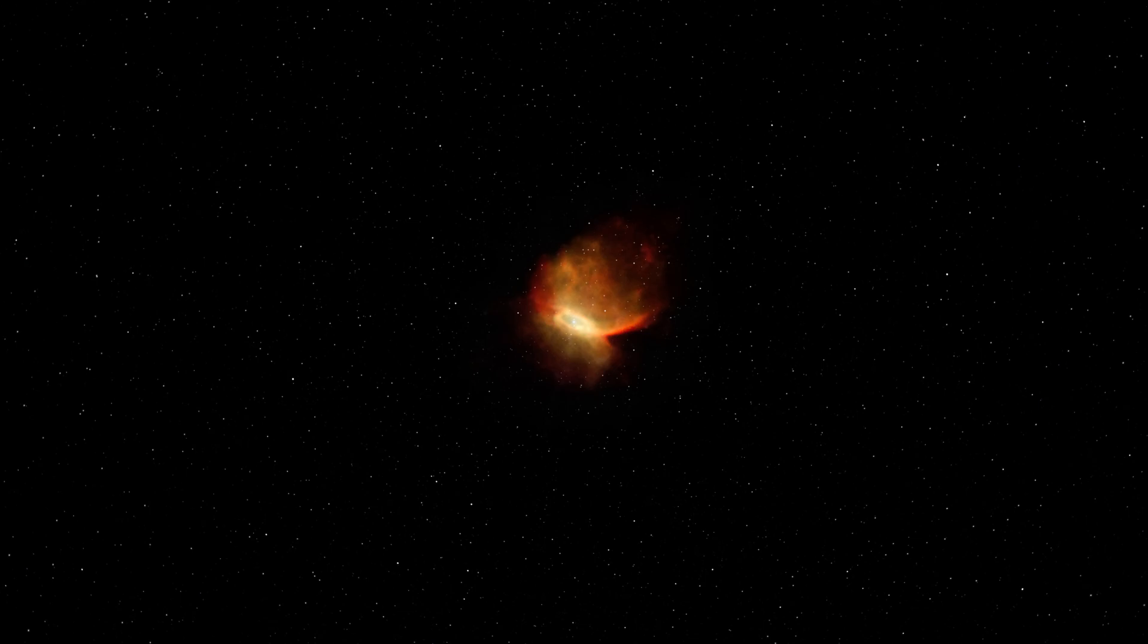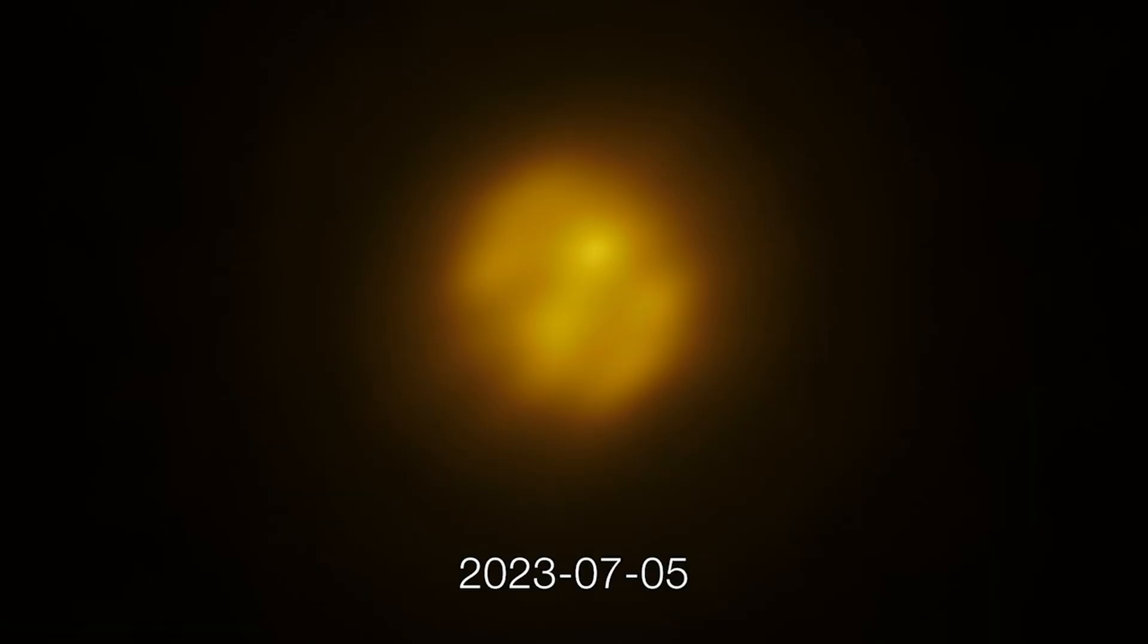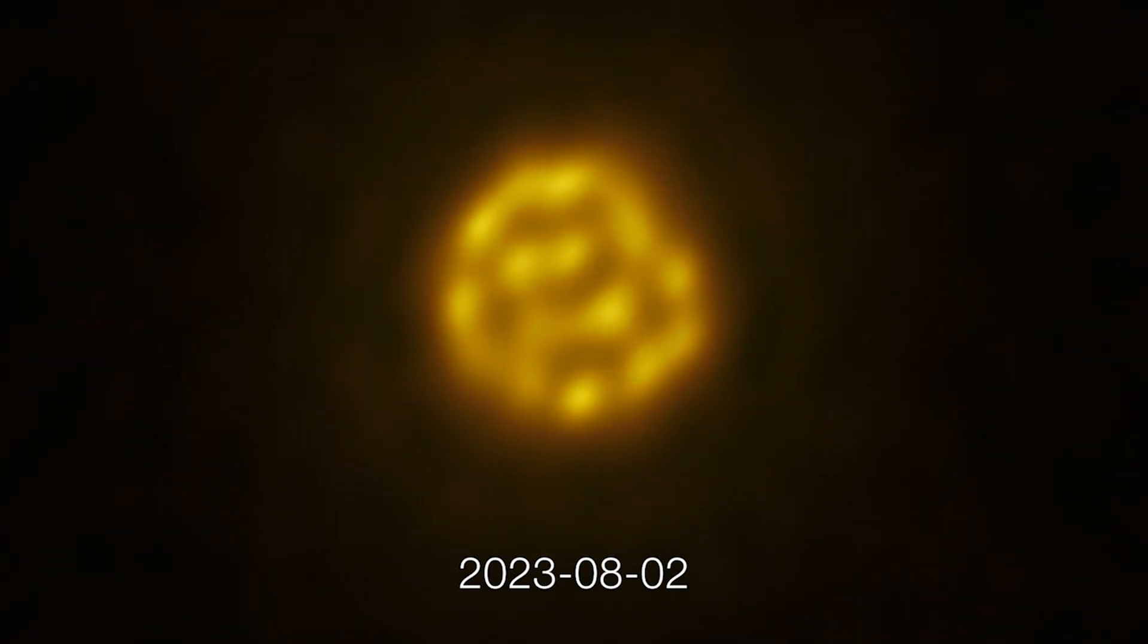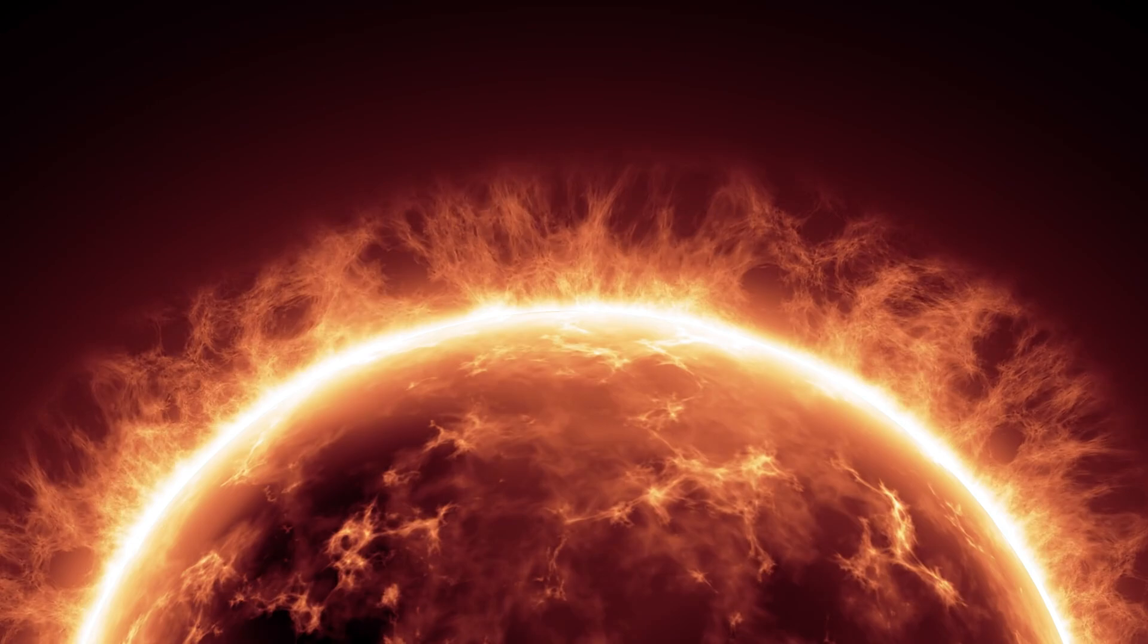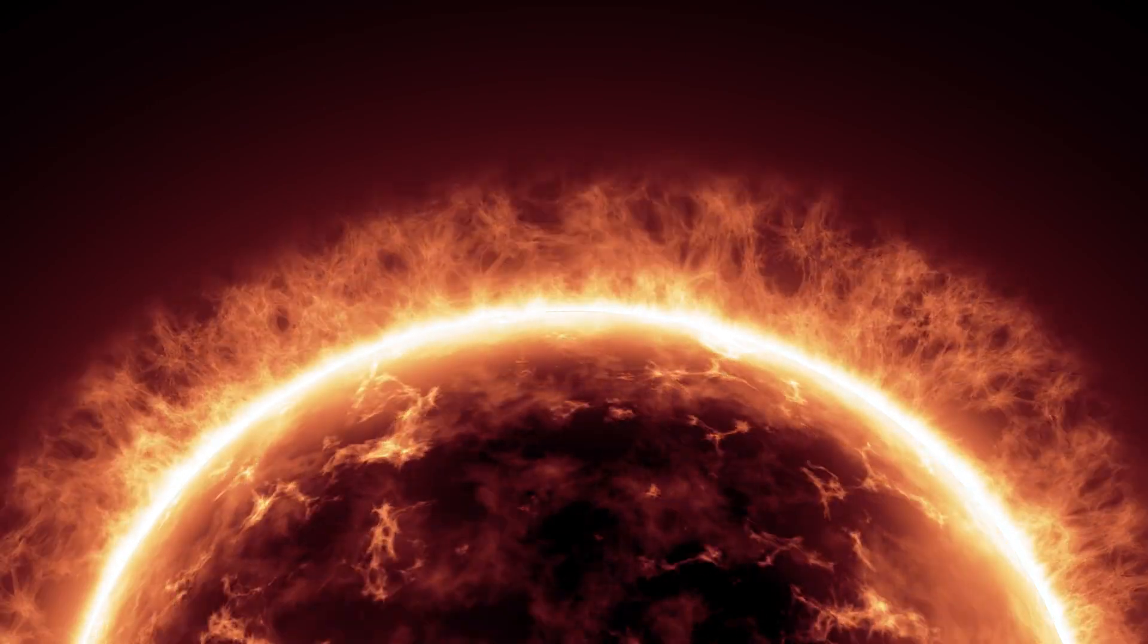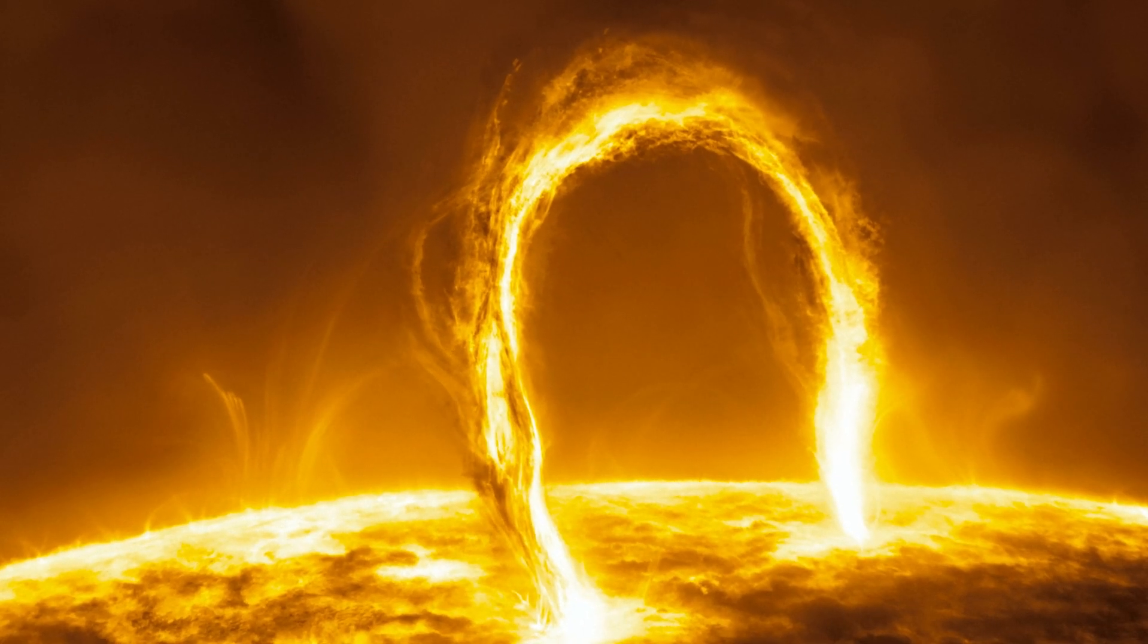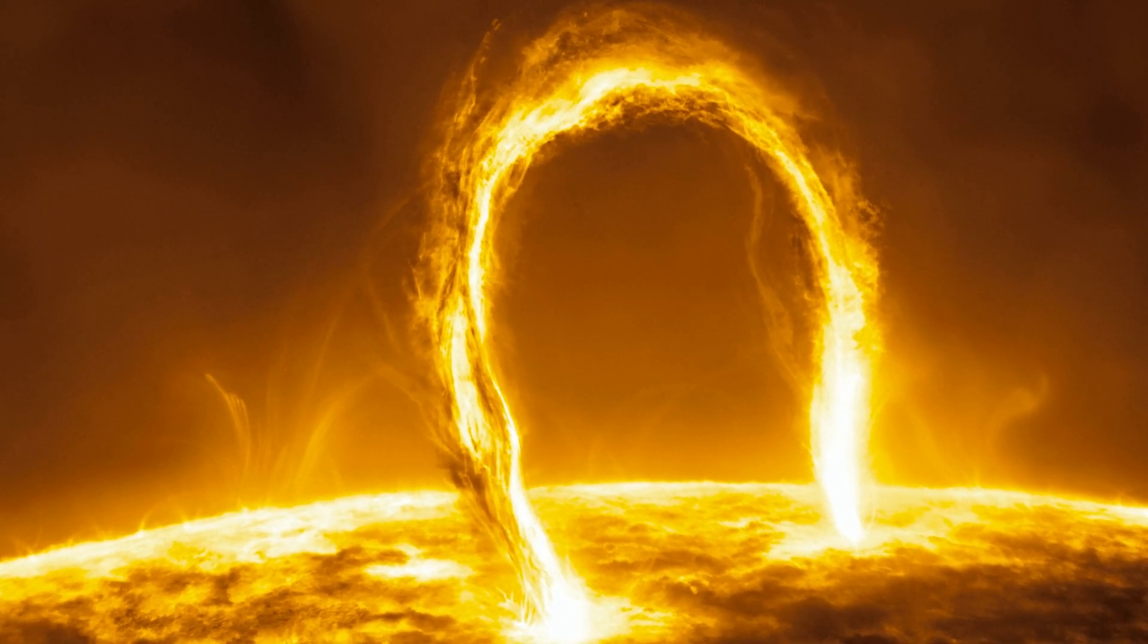Betelgeuse is 16 times the size of the Sun, emits 126,000 times as much light as the Sun, and is visible from a distance of 548 light years. It is cooler than the Sun, with a surface temperature of 3,600 Kelvin. Around Betelgeuse, just about 13% of its total radiant energy is made up of visible light.